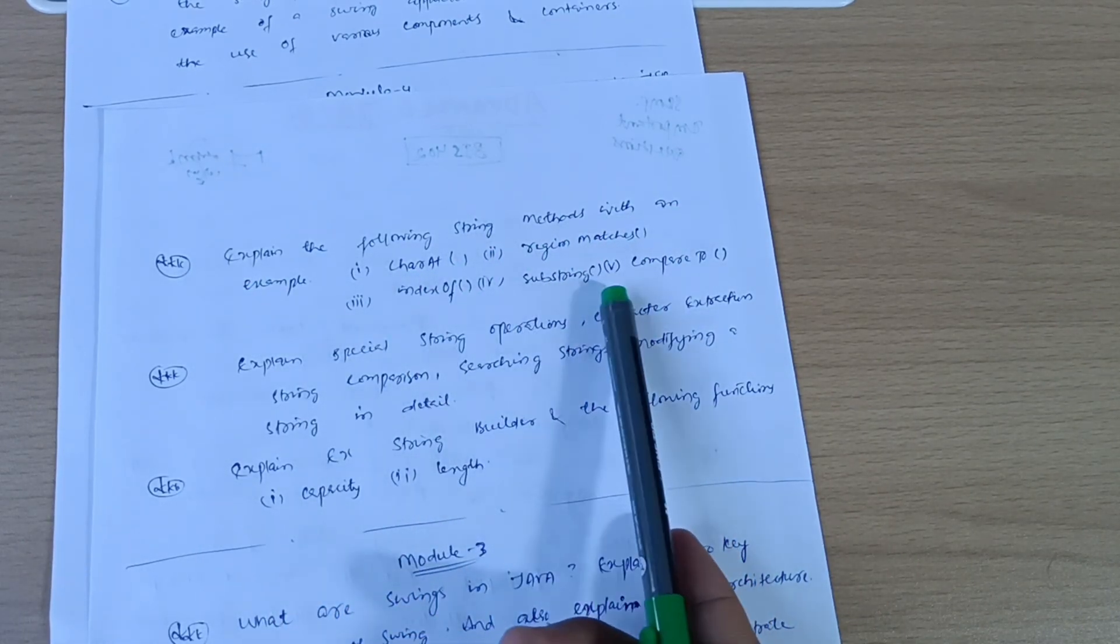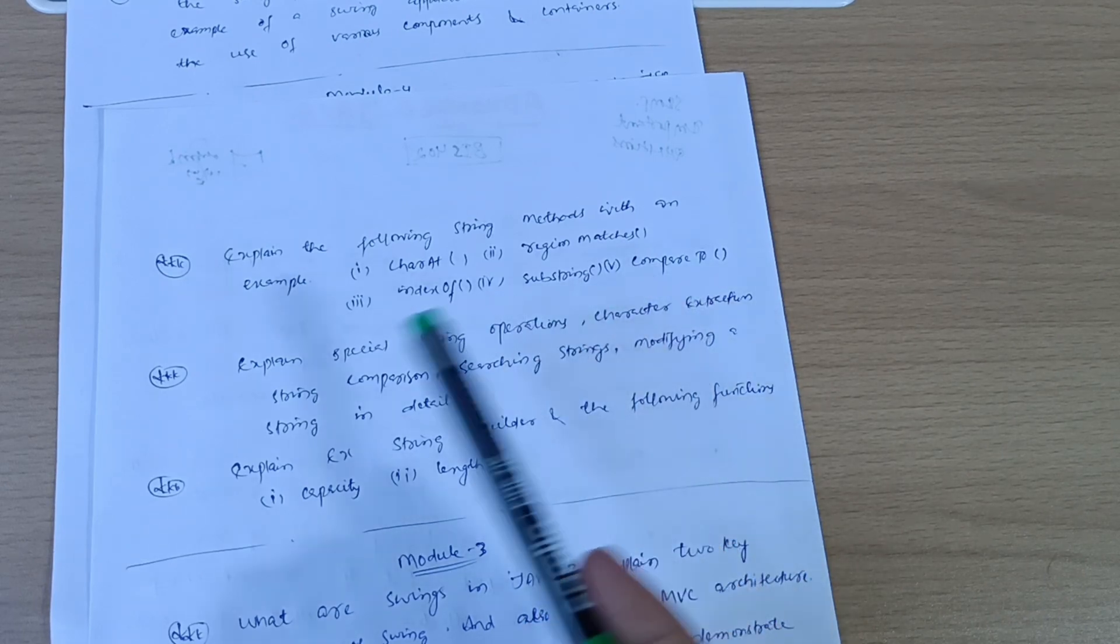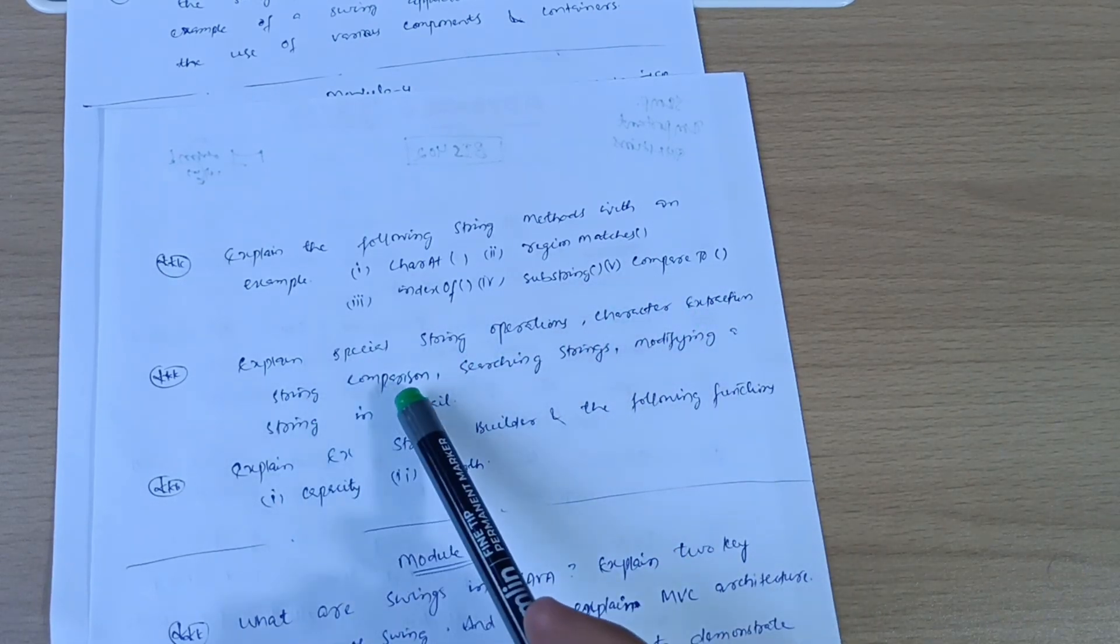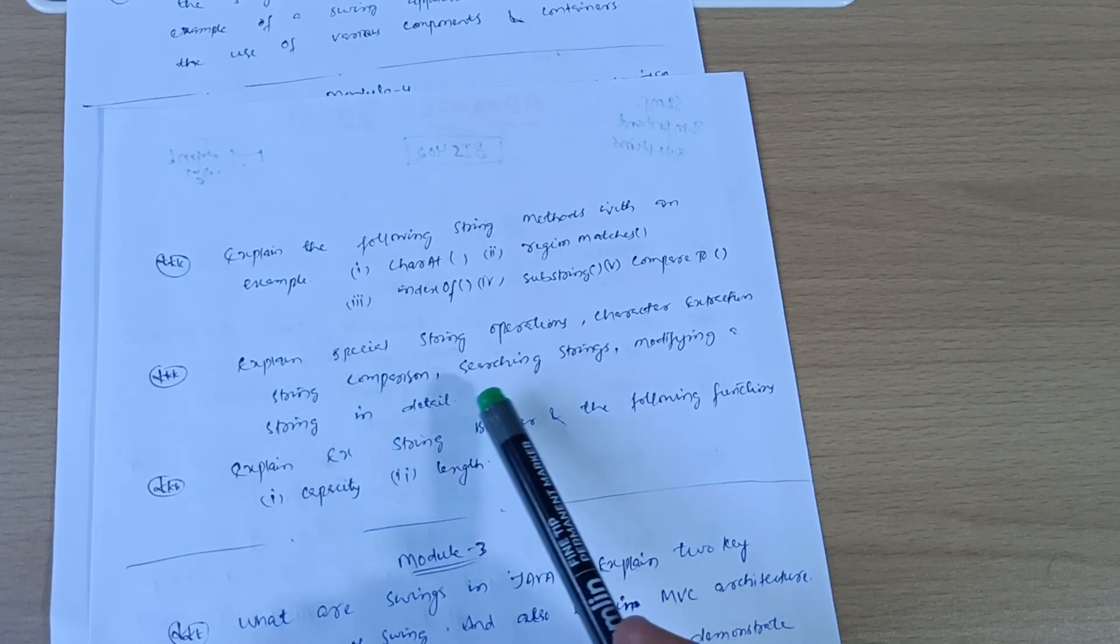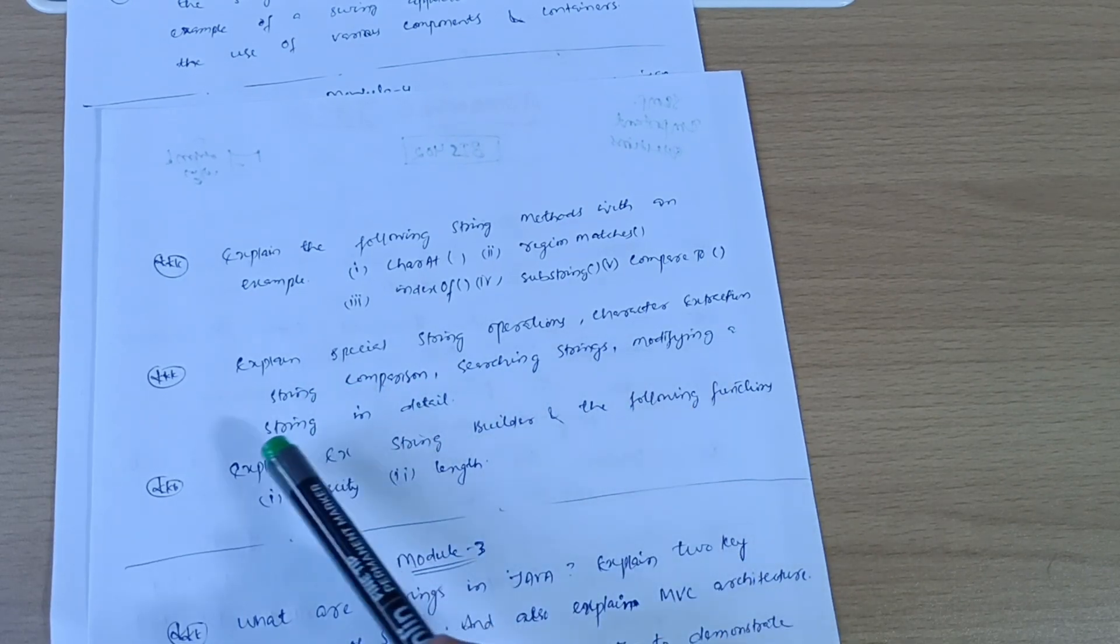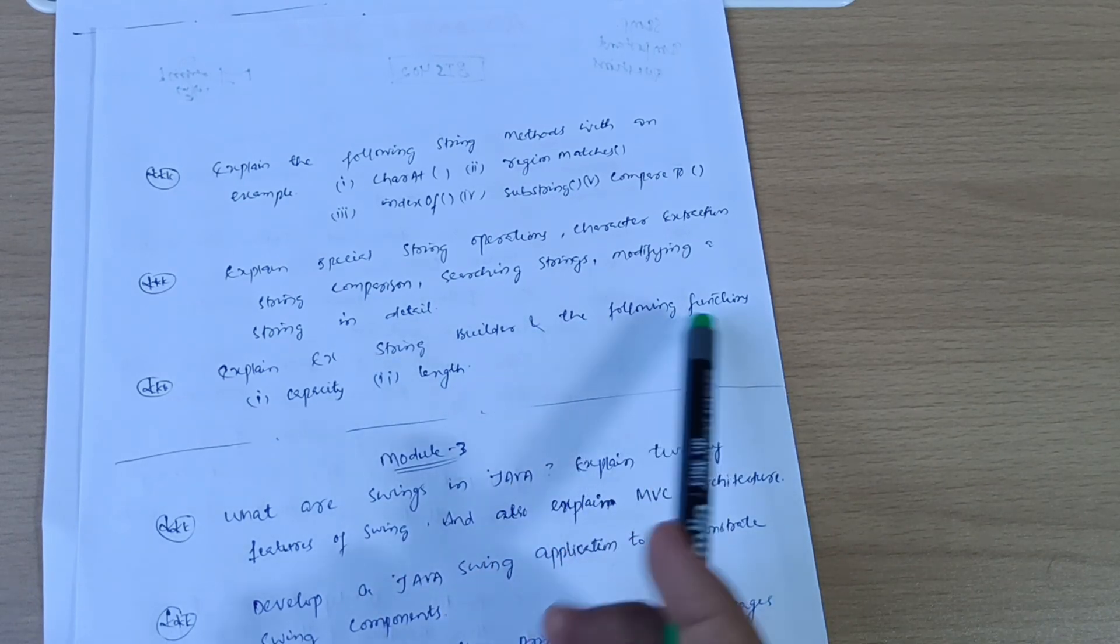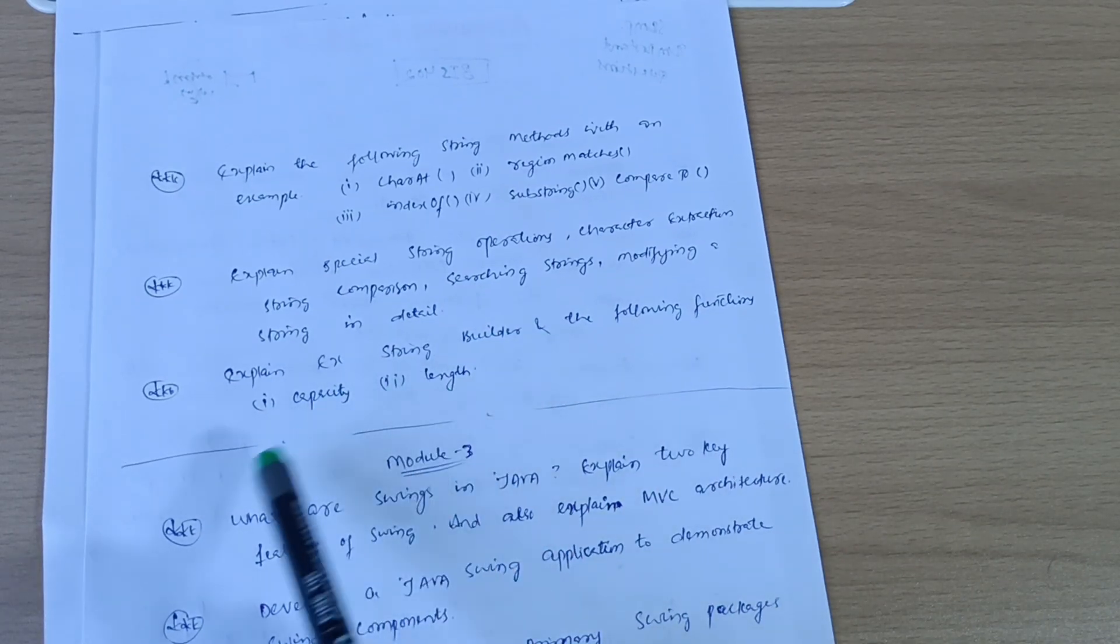Substring, compareTo. Explain special string operations: character extraction, string comparison, searching strings, modifying a string in detail. Explain string builder and the following functions like capacity and length. So this is all about module second.